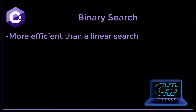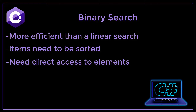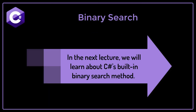A binary search is more efficient than a linear search. However, there are a few limitations. First, a binary search can only be applied if the items in the collection are sorted. Second, we can only apply a binary search to data structures that give us direct access to elements — for example, we cannot perform a binary search on a linked list.